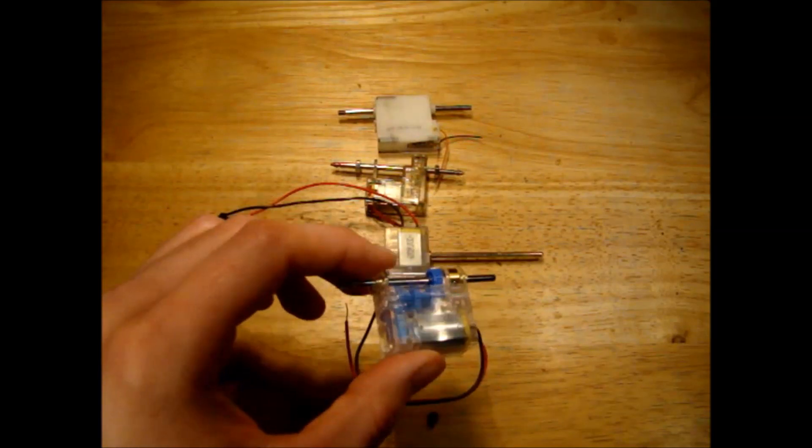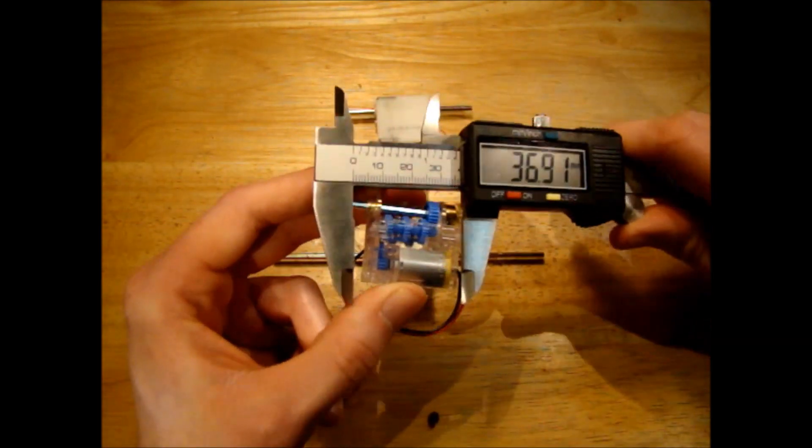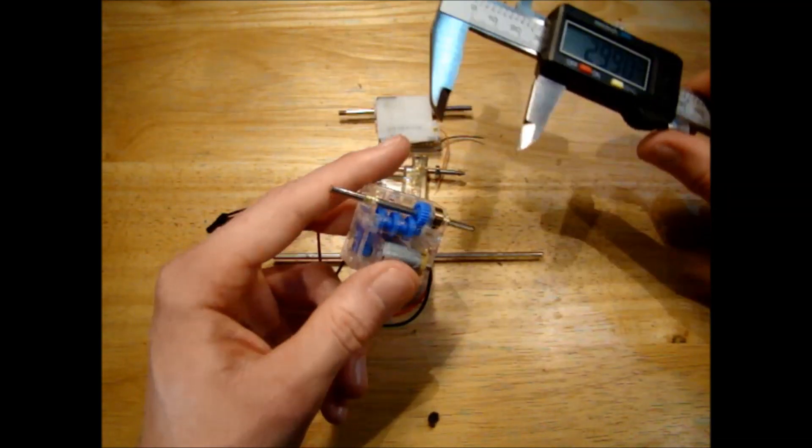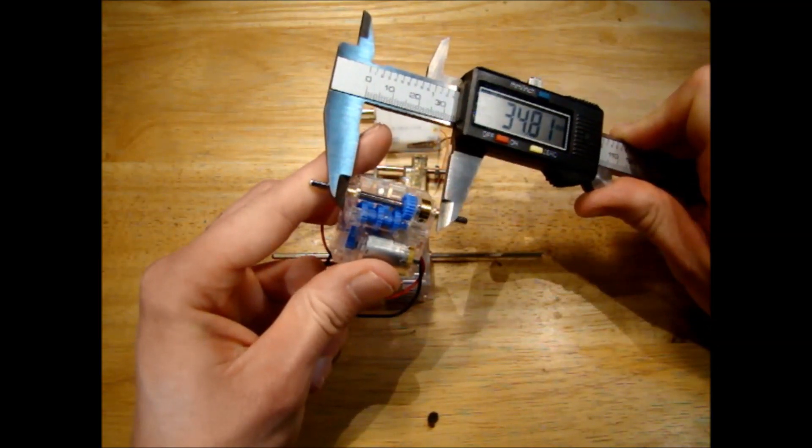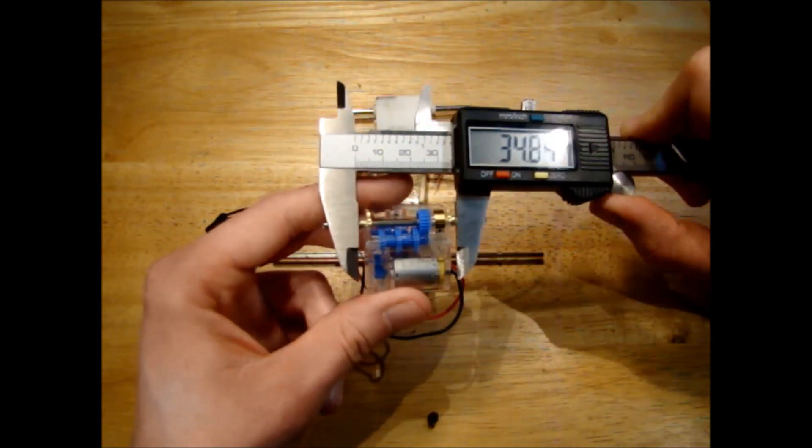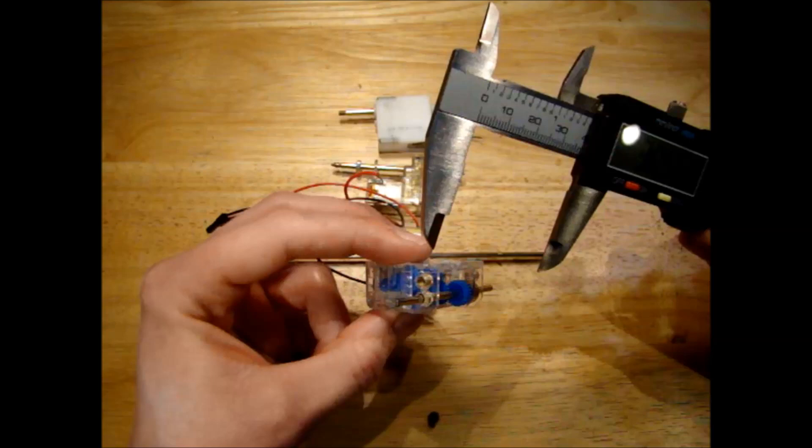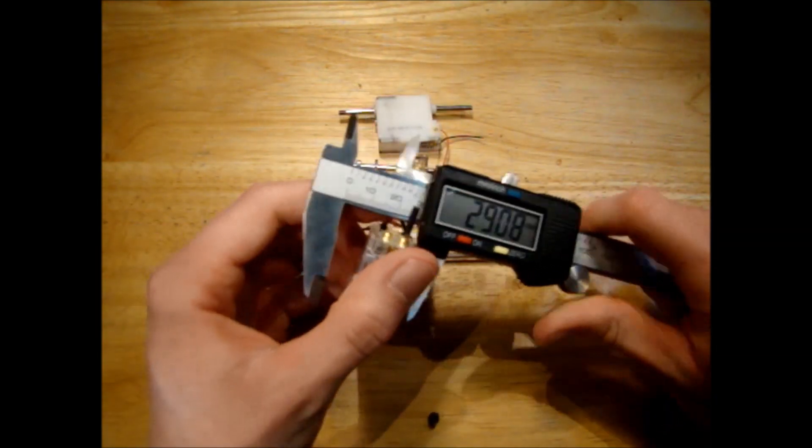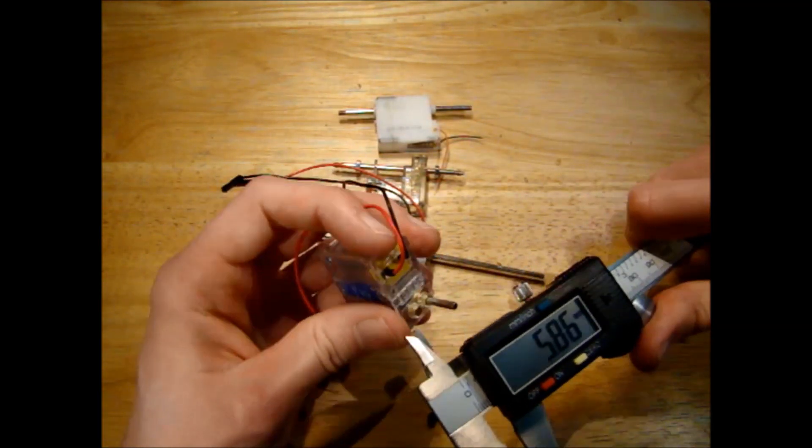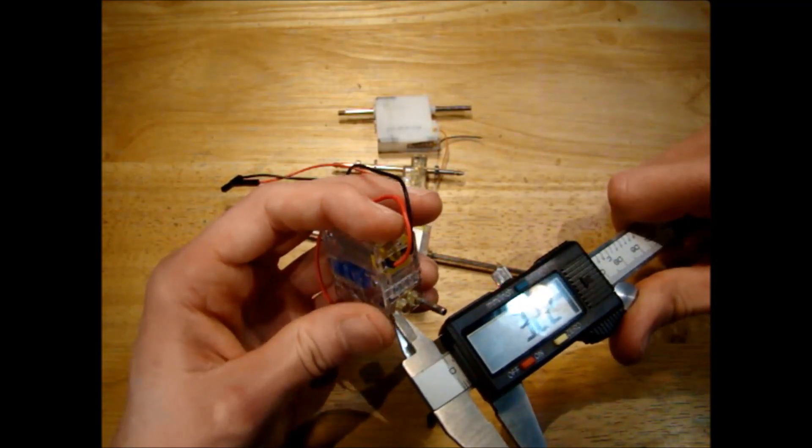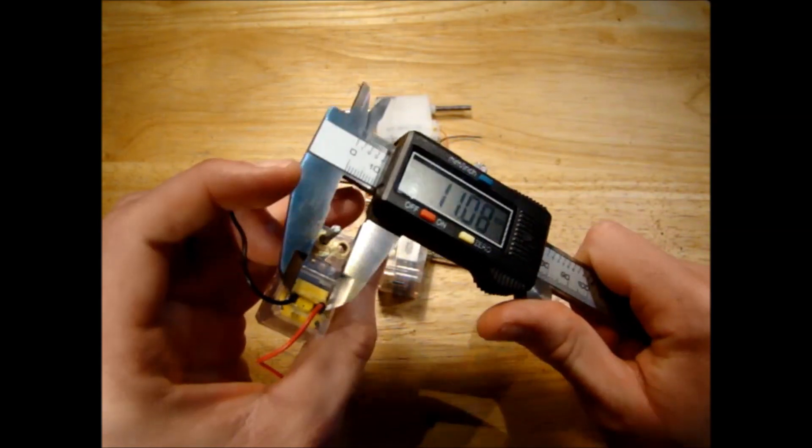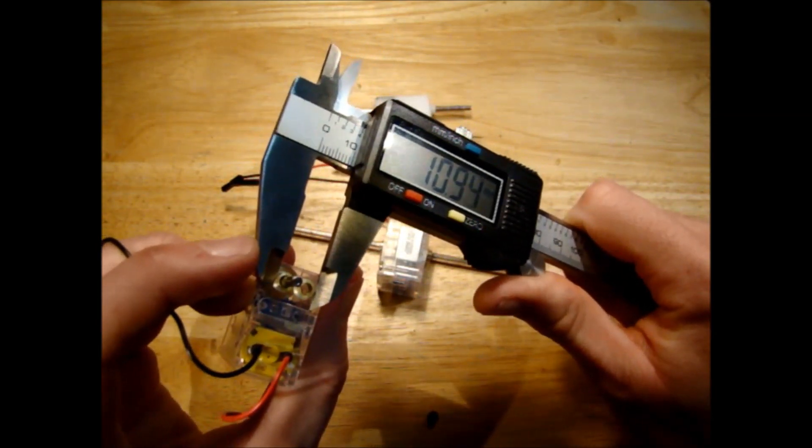Let's take a look at our 12-speed motor first. The most important dimensions would be the width of the motor. Down here in the body where the motor itself is, you're looking at about 30 millimeters, and where it sticks out here at the axle, that's around about 35 millimeters. The height of the motor or the height of the gearbox is about 17 millimeters.